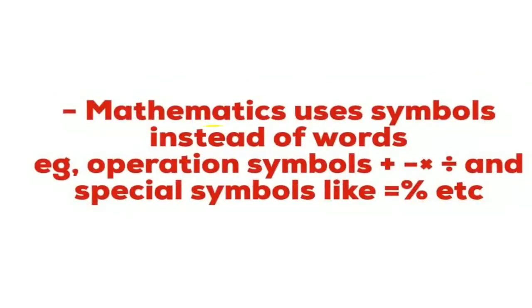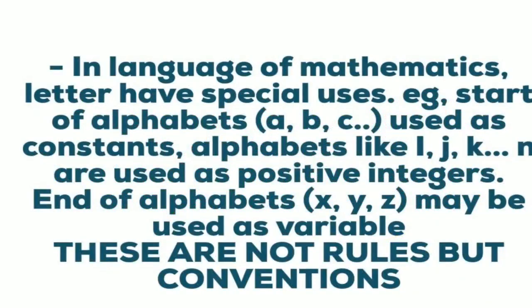Next, mathematics uses symbols instead of words. We have operational symbols like plus, minus, multiplication, and division, and special symbols. In mathematical language, letters also have special uses - for example, constant alphabets like a, b, c, and index or subscript letters like i, j.